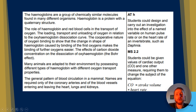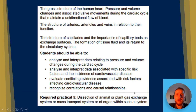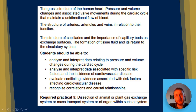Looking at the spec, you need to know all about haemoglobin and its role in the transport of oxygen — loading, transport, and unloading of oxygen — the oxygen dissociation curve, the Bohr effect, and how animals are adapted to their environment by possessing different types of haemoglobin. You also need to know the general pattern of blood circulation in a mammal, cardiac output (stroke volume times heart rate), the gross structure of the human heart, the structure of arteries, arterioles and veins, the formation of tissue fluid, and how to interpret data on the cardiac cycle and cardiovascular disease. There's also a required practical: the dissection of animal or plant gas exchange systems.